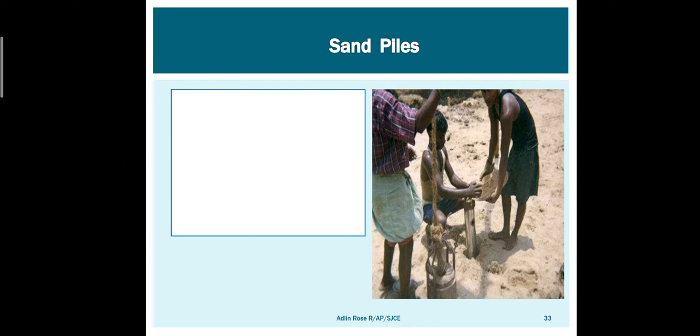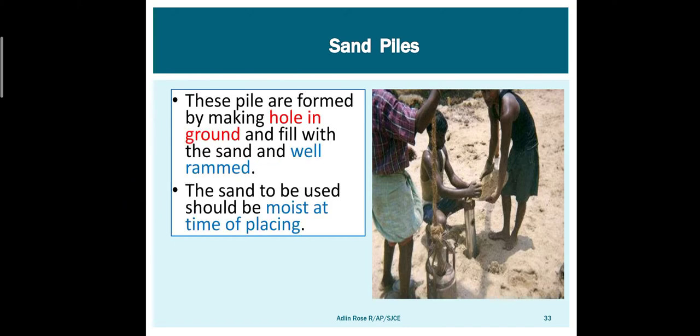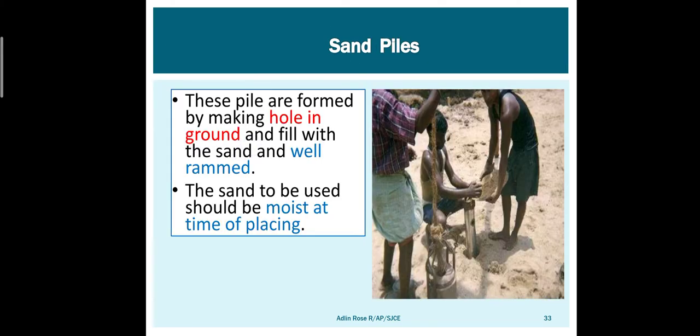Sand pile: boreholes are made in the soil and sand is poured and thoroughly compacted inside. The sand placed inside should be slightly wet. Third classification is based on methods of installation.